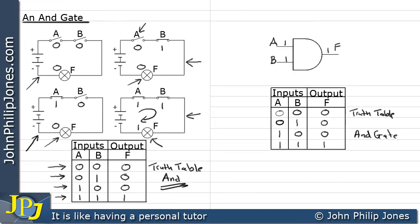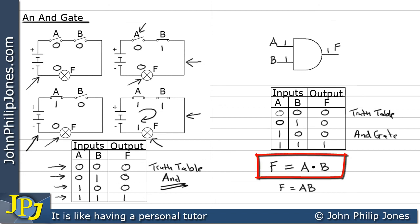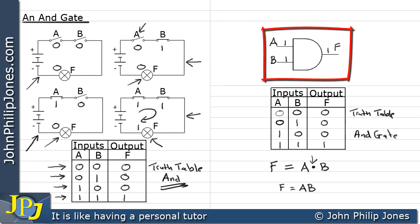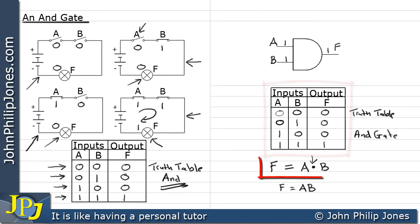The Boolean representation of an AND gate is as follows: the output F depends on input A and input B. We write AND with a dot, so that becomes F = A·B. We can often write this simply as F = AB, meaning that if there is no symbol between two input variables we assume it is an AND. But I would always recommend using the dot symbol until you become well-versed with logic gates.